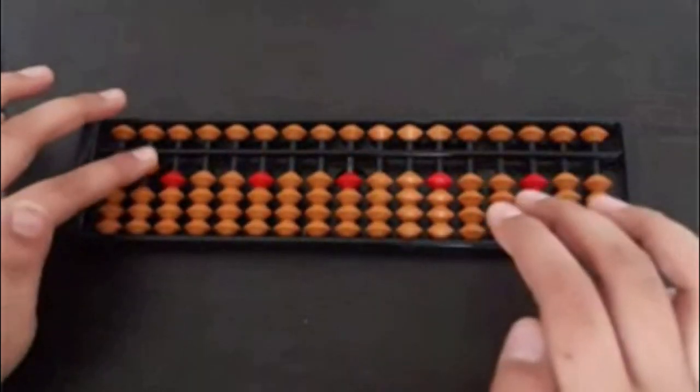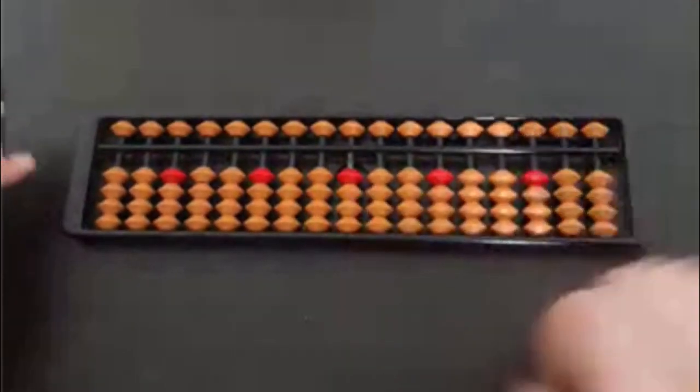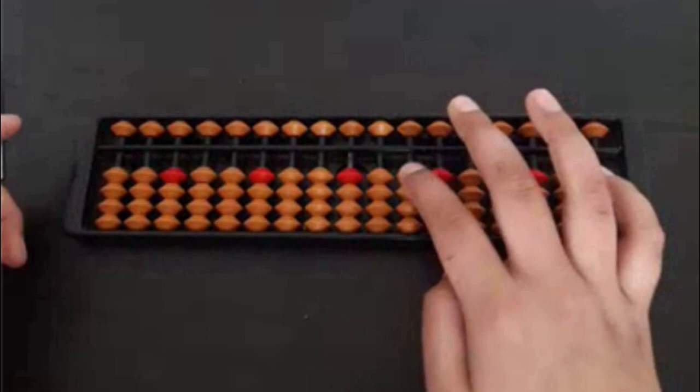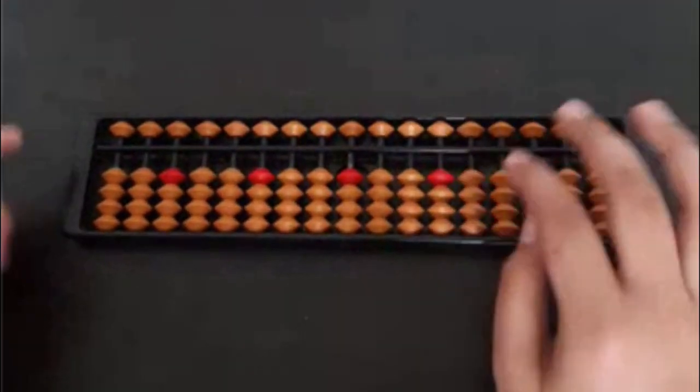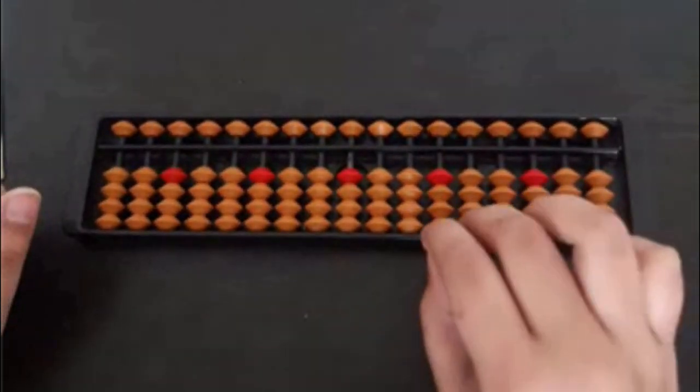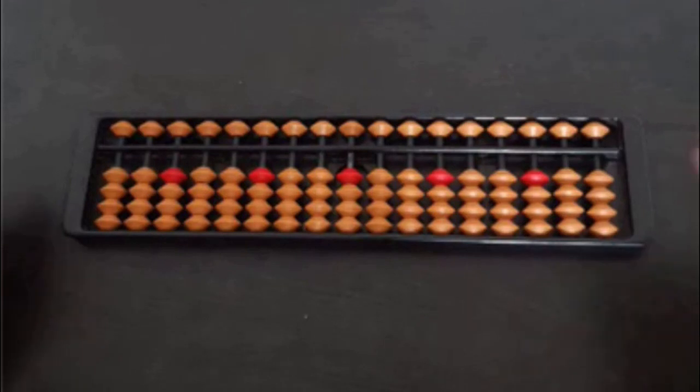And if we move this side it will be in decimals like 0.1, 0.10, 0.100 and so on. So we will be firstly learning the first basic thing which is the rough pattern.